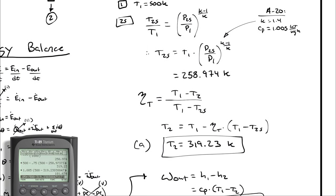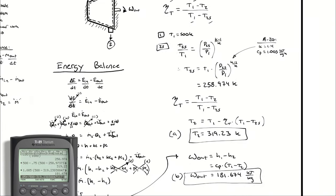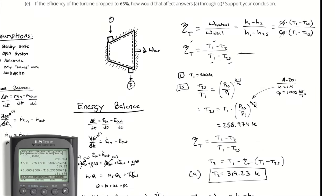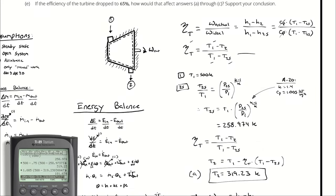Note that I could have gotten to that answer by determining what the ideal work would be, and then using this proportion. I can say the actual work is equal to 0.75 times the ideal work.